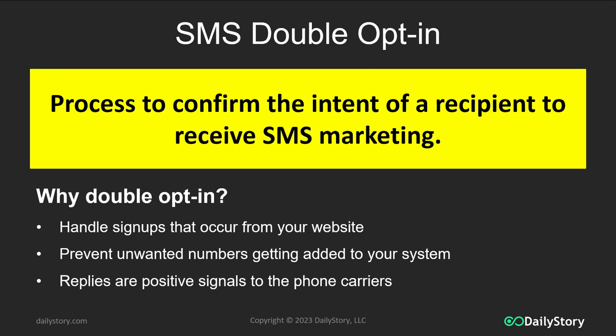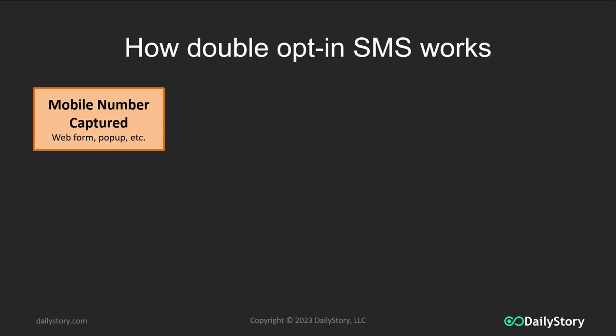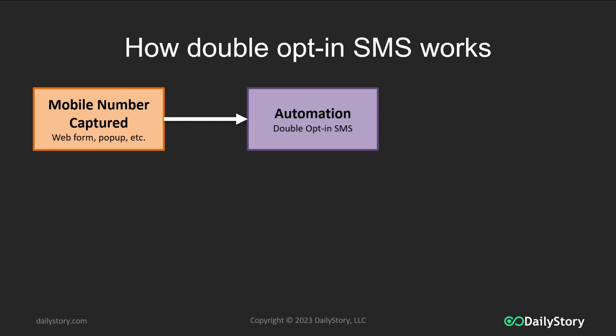And that causes problems with delivery. So let's look at how this works exactly. When you run a double opt-in process, you're going to capture the mobile number — through a web form, a pop-up, or through some other mechanism on your website. You're then going to run through an automation called a double opt-in SMS automation.